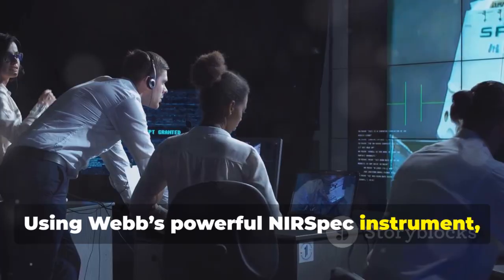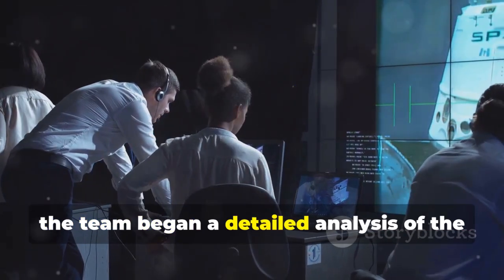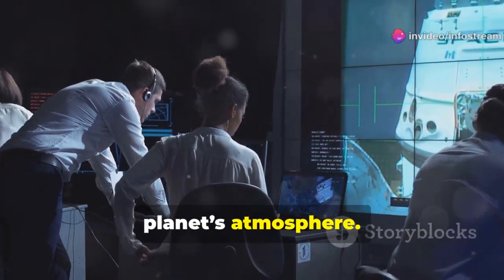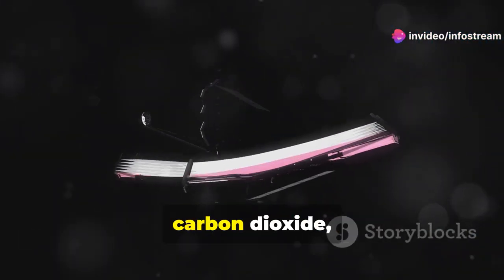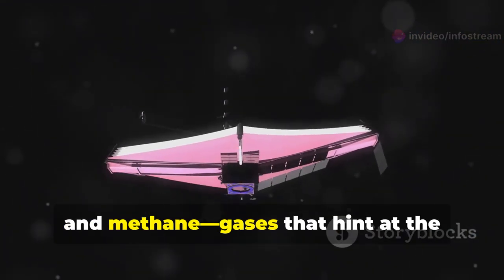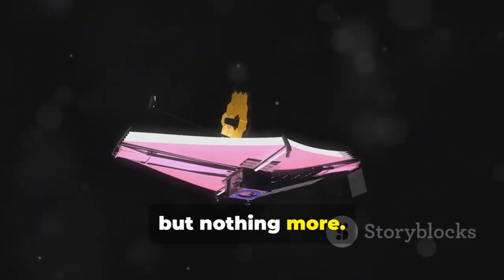Using Webb's powerful NIRSPEC instrument, the team began a detailed analysis of the planet's atmosphere. They expected to find the usual suspects: water vapor, carbon dioxide, and methane, gases that hint at the possibility of life, but nothing more.